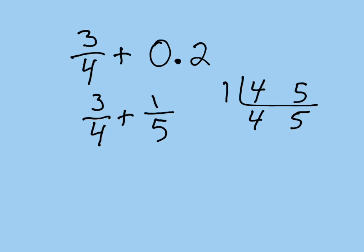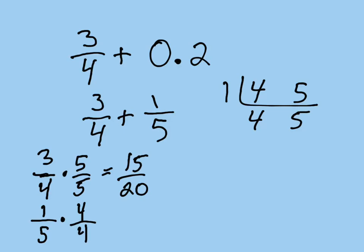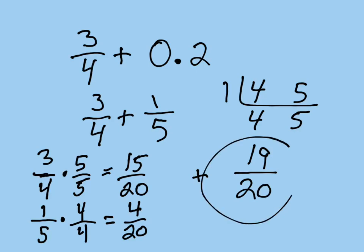So then we take 3/4, multiply it by 1 in the form of 5/5. We get 15/20, and then we have 1/5 times 4/4, and that's 4/20.